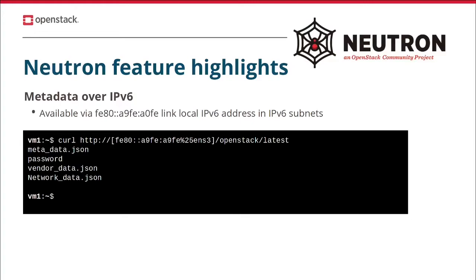One thing to be aware of is that Cloud Init, as far as I know, does not support metadata over IPv6 yet. So Cloud Init will not work with IPv6-only networks for now. But if you have your own scripts or want to add your own data provider in Cloud Init, you can do that and use IPv6 to get metadata.